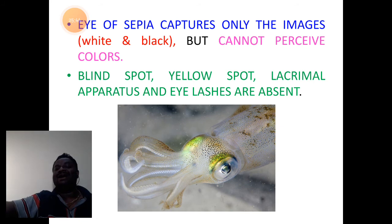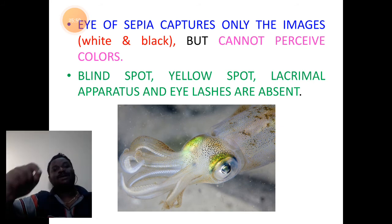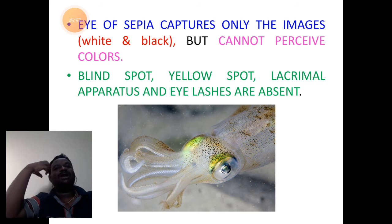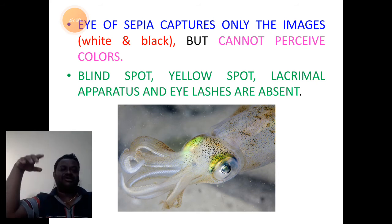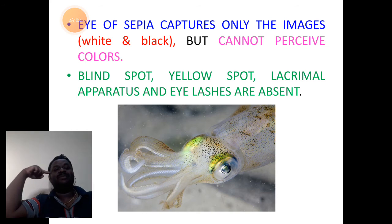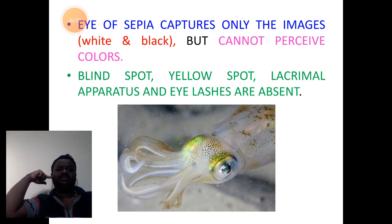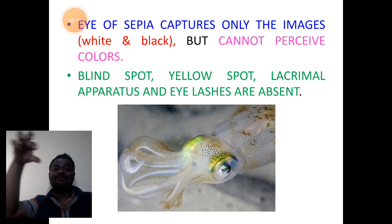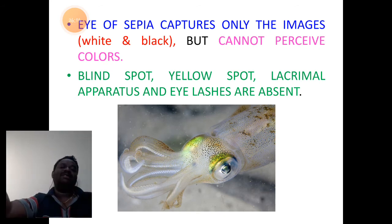They are all absent in the eye of the organism. The yellow spot is the spot in the eye where only cones are present. The lacrimal apparatus in the case of vertebrate eye brings about lacrimal secretion — that is, tears. Eyelashes are structures that help in protecting the eyes — vertebrates have these, whereas cephalopods do not have all these structures.